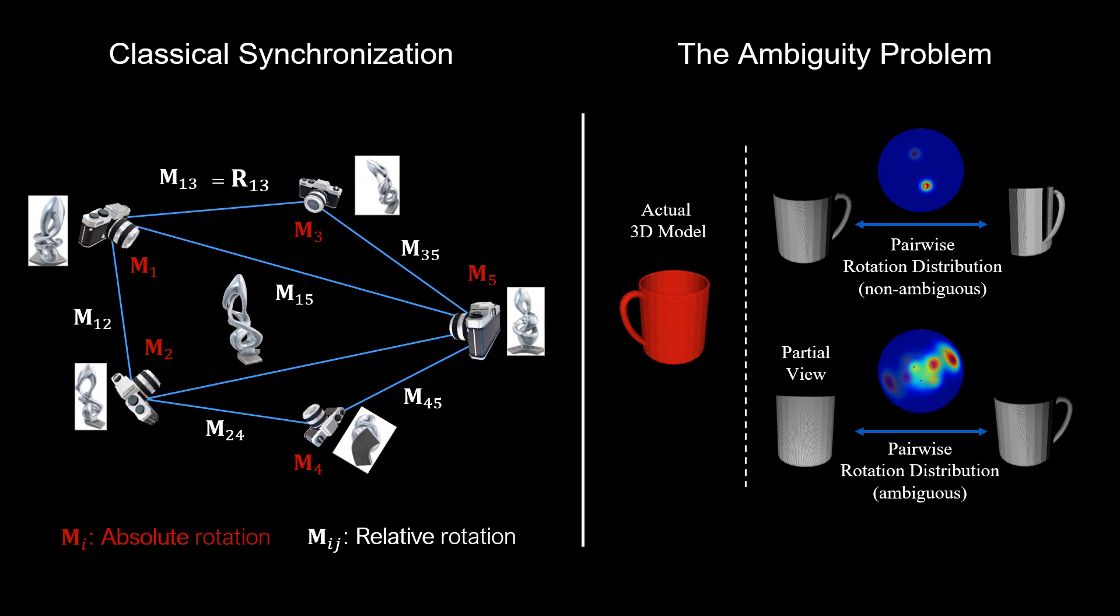However, in real situations, observations contain ambiguities, preventing a reliable estimate of relative rotations. In such cases, rather than a single hypothesis,